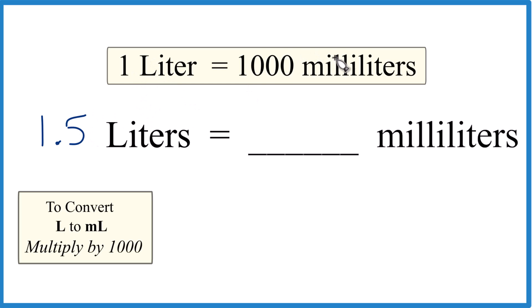So 1.5 liters, that should be more than a thousand milliliters when we get our final answer here. To convert from liters to milliliters, we're just going to multiply by a thousand.